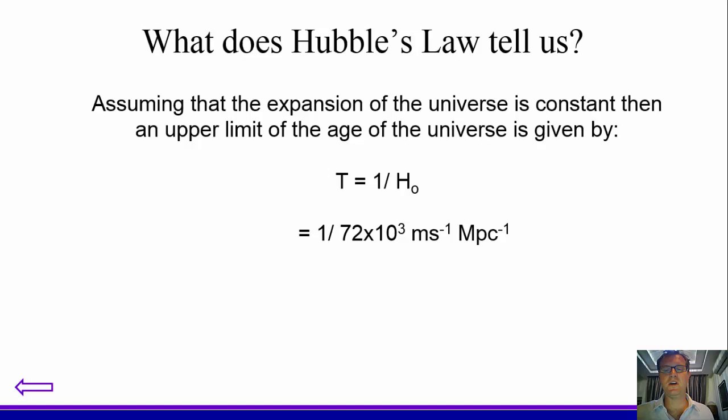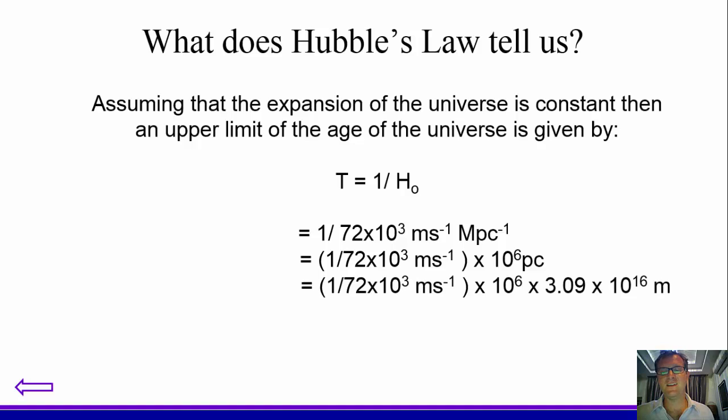So this is 1 divided by 72 times 10 to the 3 meters per second per megaparsec. Now clearly, there's not a clear unit there, so we're going to do some changing of our units. First of all, we're going to convert into parsecs. And then we're going to convert into meters. And then we see the meters and the meters are going to be able to cancel out. That should be meters to the minus 1. And give me a final answer as 4.29 times 10 to the 17 seconds, which is 13.6 times 10 to the 9 years.